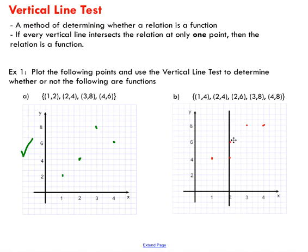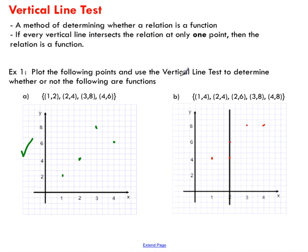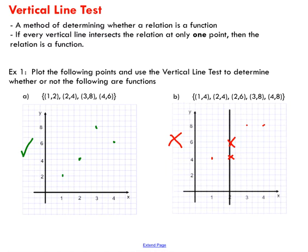As I pass through my next point, there are actually two points on this vertical line — this relation violates the vertical line test. You can see there are two points on that vertical line, and from that we can conclude that this relation is not a function. That's how the vertical line test works.